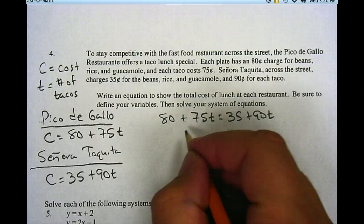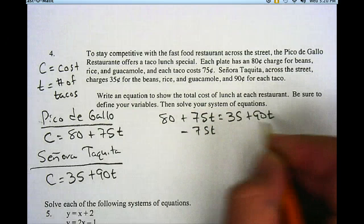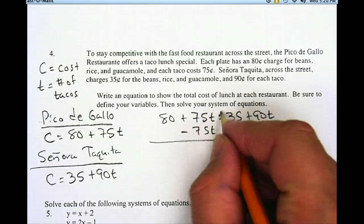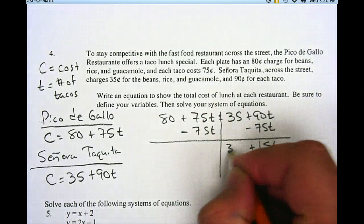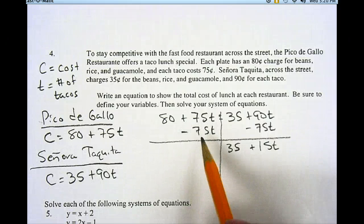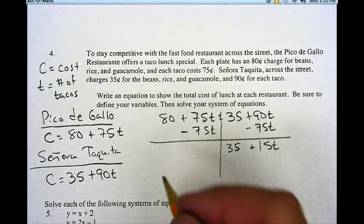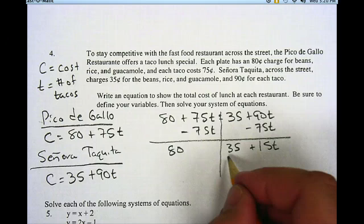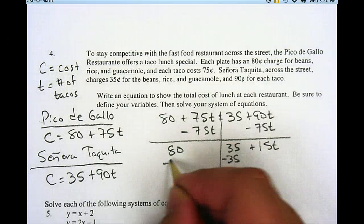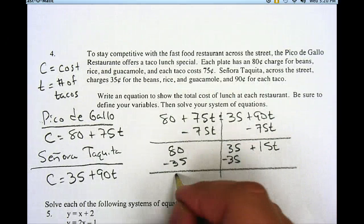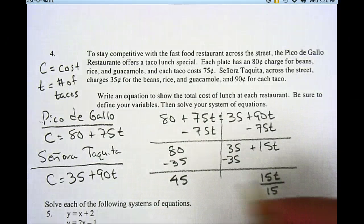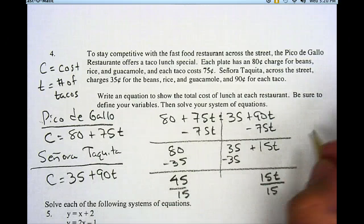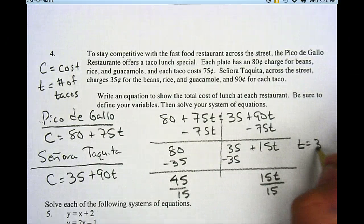So I'll subtract 75t from both sides of the equation. And I get 15t over here, plus I still have that 35. Over here, the positive and negative 75t cancel each other out, so I just have 80. So I'll subtract 35 from both sides. And I have 45, and that's equal to 15t. I can divide both sides by 15, and I get t is equal to three tacos.